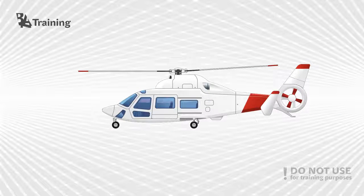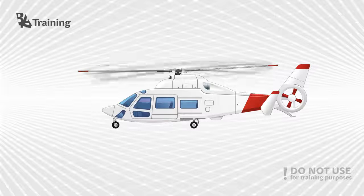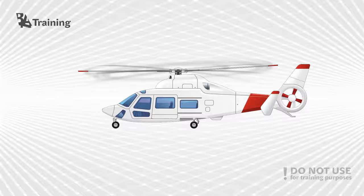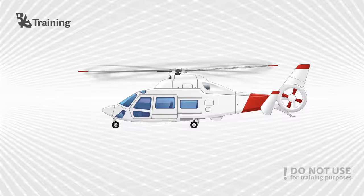Ducted fan: ducted fans have between 8 and 18 blades arranged with irregular spacing so that the noise is distributed over different frequencies. The housing is integral with the aircraft skin and allows high rotational speed; therefore a ducted fan can have a smaller size than a conventional tail rotor.